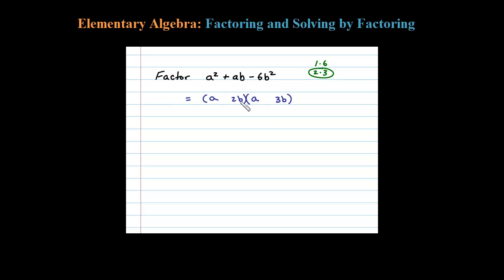Now we have to determine the signs, and that comes from multiplying the inner terms and the outer terms. The inner term is 2ab and the outer term is 3ab. Negative 2ab plus 3ab equals positive 1ab, so the 2 should be negative and the 3 should be positive.